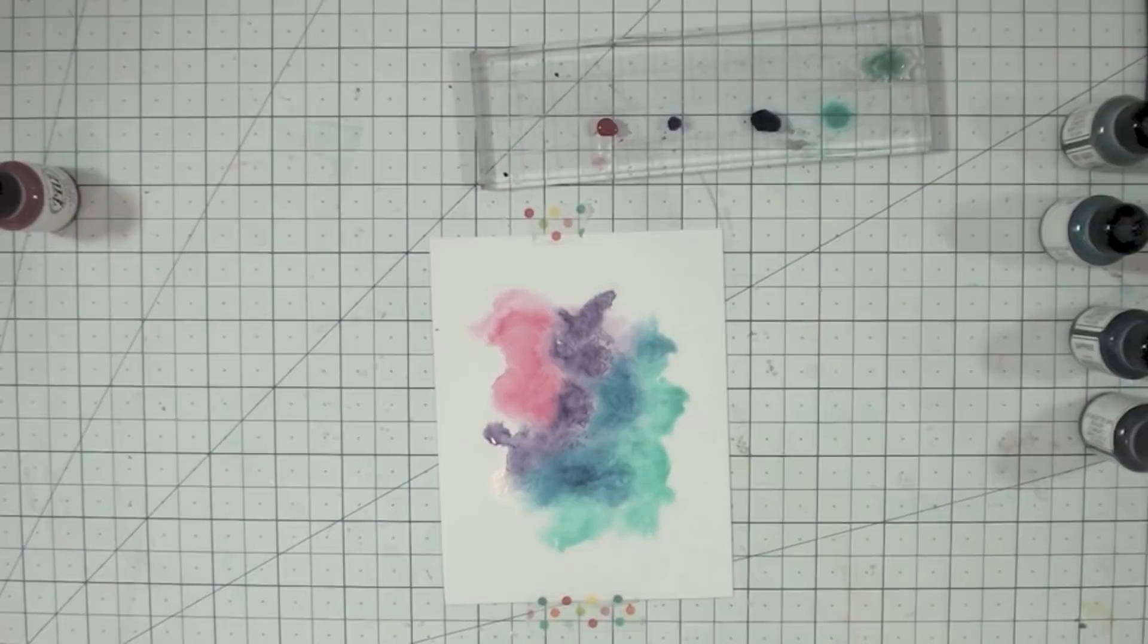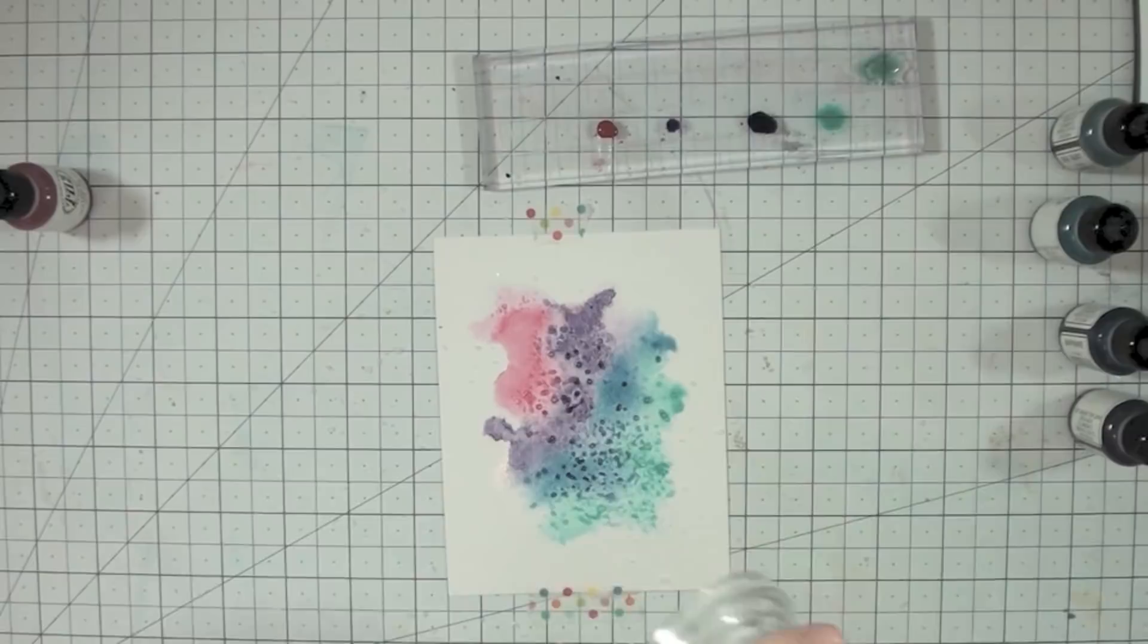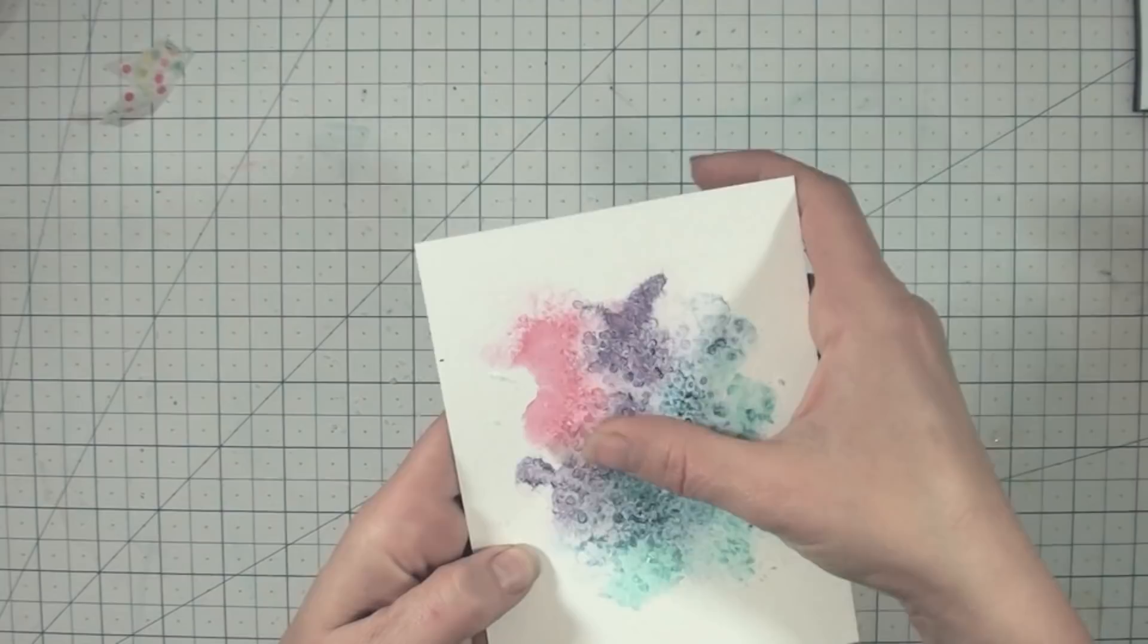So once I have my watercolor coverage exactly how I want it, then I'm ready for the next part of this technique, which is bringing on the salt. So to do this, I'm just gonna shake my salt right over the top of that wet watercolor and then I have to wait to let it dry.